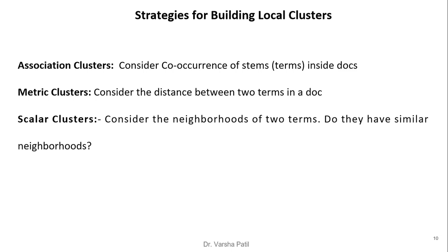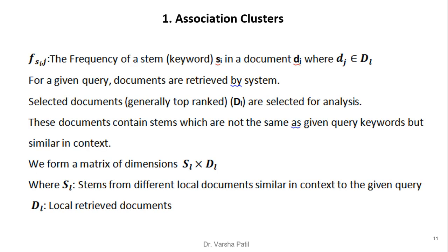Three strategies are used for building a local cluster. First is association: it considers the co-occurrence of stems inside documents. Metric cluster considers the distance between two terms within a document. Scalar cluster considers the neighborhood of two terms — if two stems have a similar neighborhood, they may be correlated. Association and scalar clusters check across documents, but metric cluster is formed within a document. For association cluster, for a given query, the top-ranked dl documents are selected for analysis. These documents contain stems that are not identical to the query words but are similar in context.